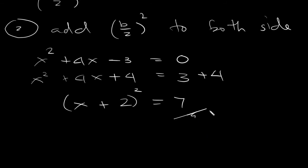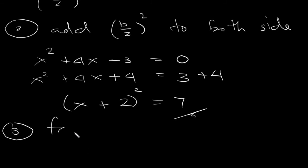This will be the final step: add and factor out. So the three steps are: compute b over 2 squared, add it to both sides, and factor out.